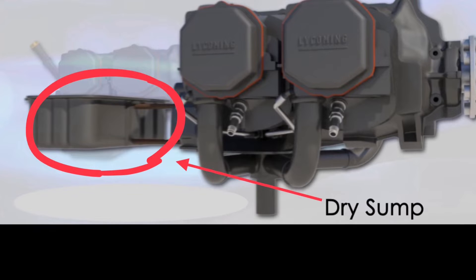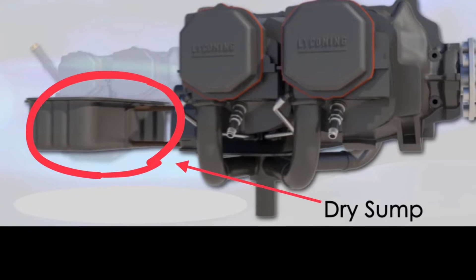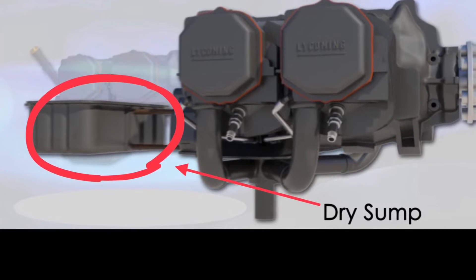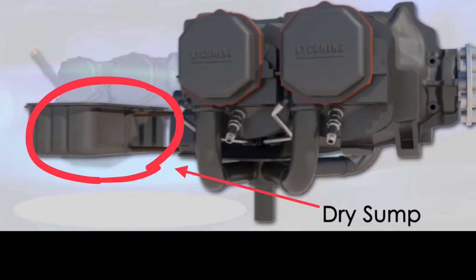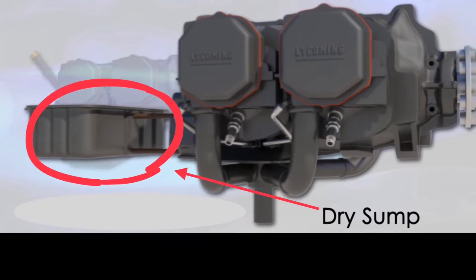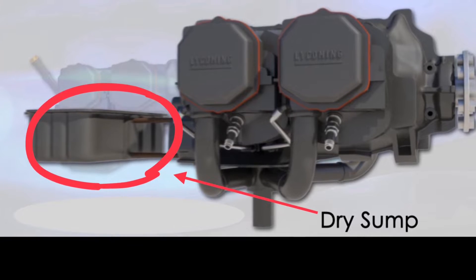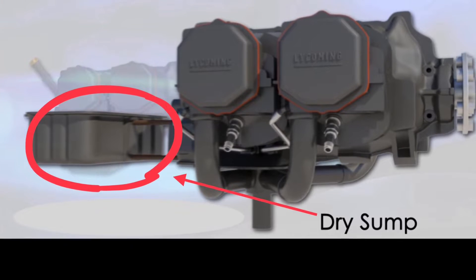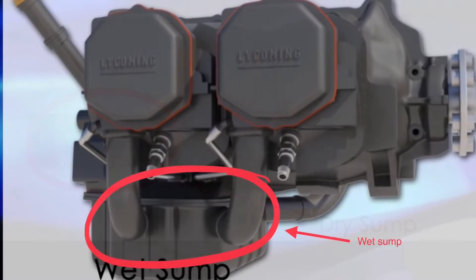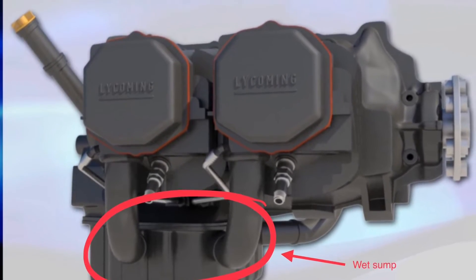Whereas in a dry sump system, that oil tank is separate from the engine and it uses a second pump to then pump the used oil from the engine back into the sump after the engine is finished with that oil. So we're going to examine a wet sump system found in a Cessna 172.